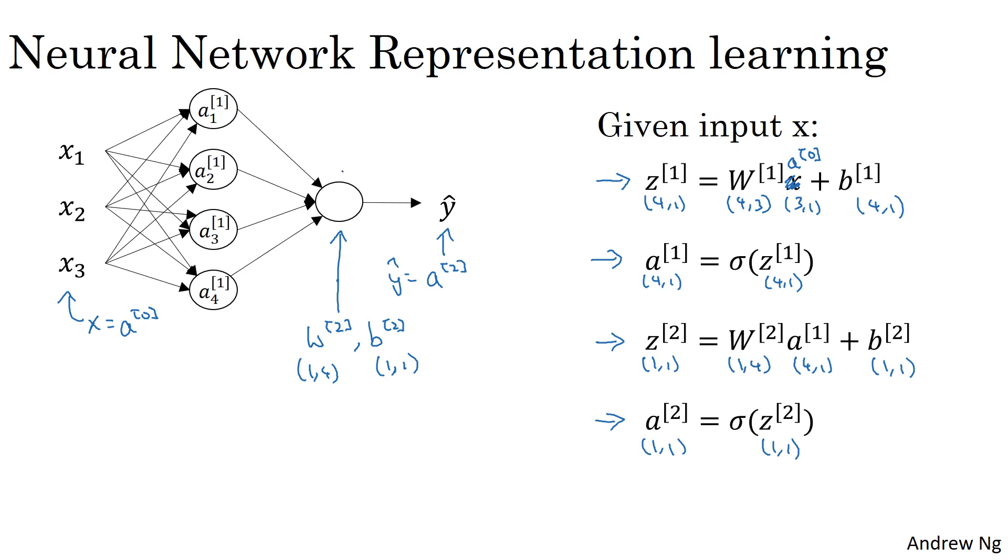And if you think of this loss output unit as just being analogous to logistic regression, which had parameters w and b, w really plays an analogous role to w2 transpose, or w2 is really w transpose and b is equal to b2. So if we were to cover up the left of this network and ignore all that for now, then this is just this last output unit is a lot like logistic regression, except that instead of writing the parameters as w and b, we're writing them as w2 and b2 with dimensions one by four and one by one.